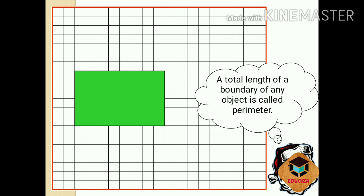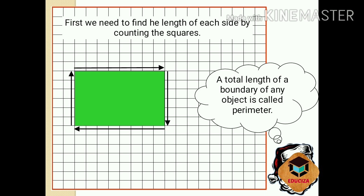Let us learn by examples. We want to find out the perimeter of this rectangle shape. First we have to find out the length of one side of this rectangle, then the other side, then the third side, and then the fourth side. Then we will add all the sides. We need to find the length of each side by counting the squares. You can count the squares in each line to get the length of one side, and in this way you can find out the length of all the sides. Add all the sides and you will get the perimeter of the rectangle.